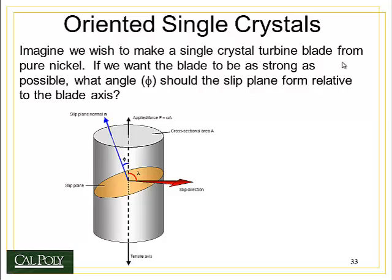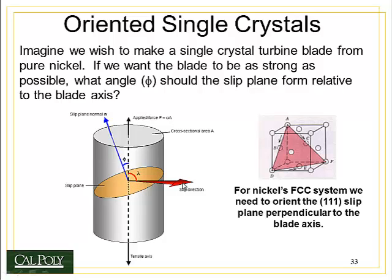What we can do with the nickel is make a single crystal blade from pure nickel. If we want the blade to be as strong as possible, we have to define an angle between the slip plane and the applied stress — that angle is called phi. Here's the normal to the slip plane, the plane on which the dislocation is going to travel, and I want that normal to be as close to zero degrees as possible relative to the blade axis. The forces will be applied along the blade axis, so I want phi to be as close to zero degrees as possible — that makes it as hard as possible for the dislocation to move.